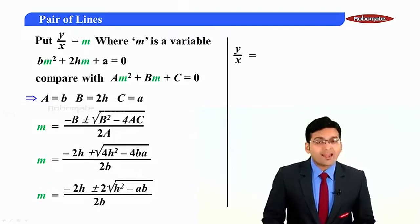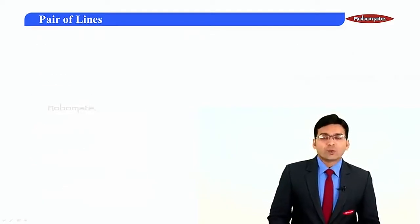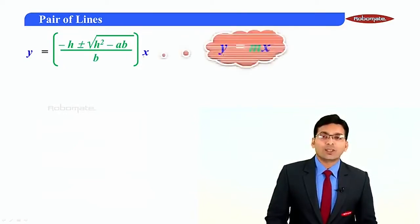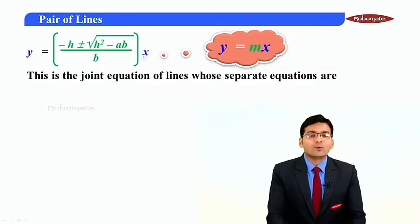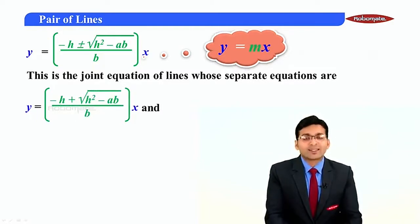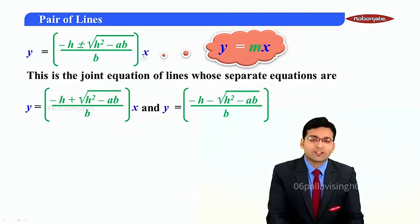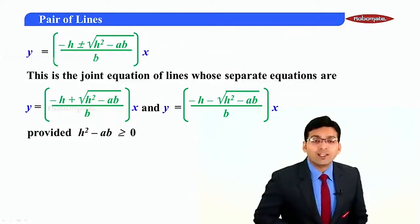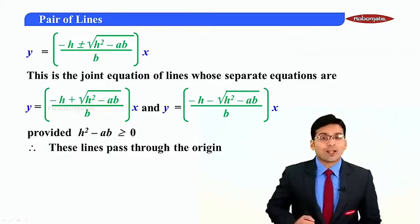So we can say y = ((-h ± √(h² - ab)) / b) · x, where y = mx is the format. The root sign exists only if h² - ab ≥ 0, and both these lines are of the type y = mx, which means they pass through the origin.